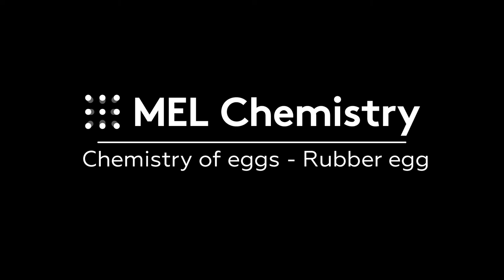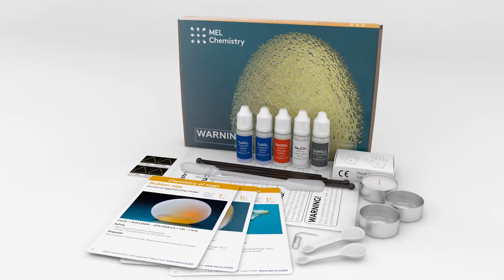Welcome to the wonderful world of chemistry. Today, with the help of the chemistry of eggs set by Mel Chemistry, we will dissolve the eggshell of an intact raw egg, with the result that the egg becomes like rubber.